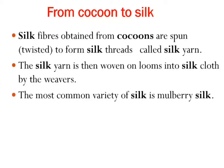From cocoon to silk: silk fibers obtained from cocoons are twisted to form silk threads called silk yarn. The silk yarn is then woven on looms into silk cloth by the weavers. The most common variety of silk is mulberry silk.